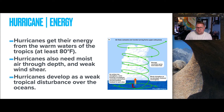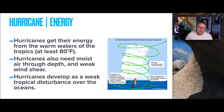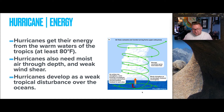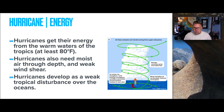Hurricanes get their energy from warm waters within the tropics. The water needs to be at least 80 degrees Fahrenheit at the surface for these storms to develop. Hurricanes also need moist air through depth and a weak wind shear within the air parcel. They develop initially as weak tropical disturbances over the ocean.